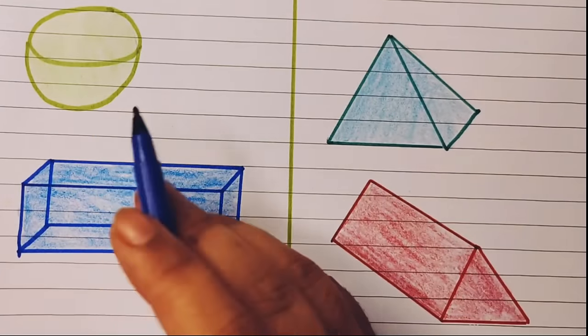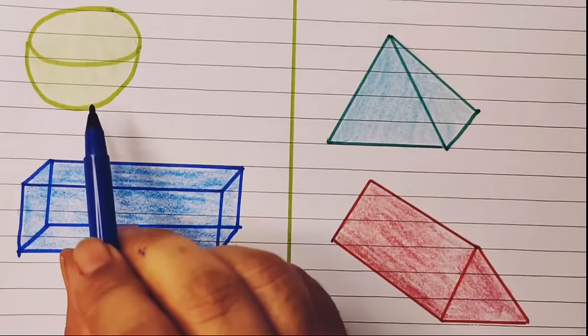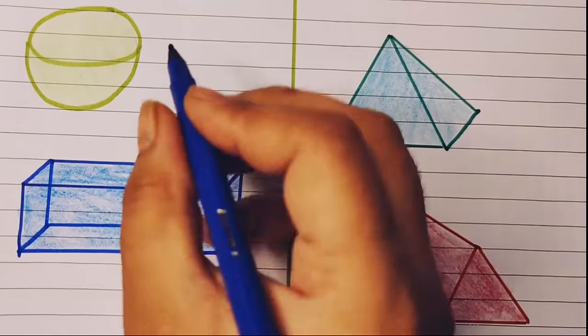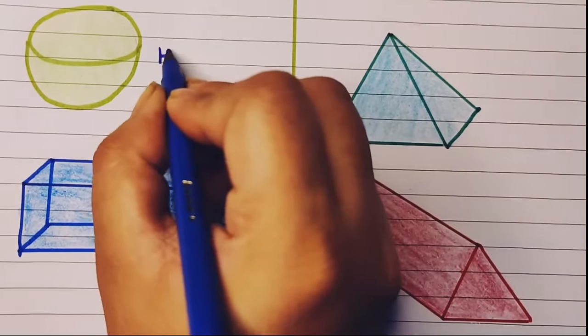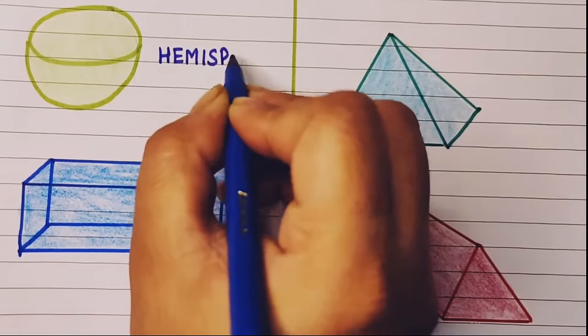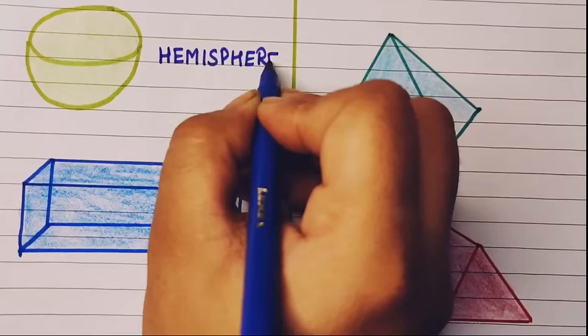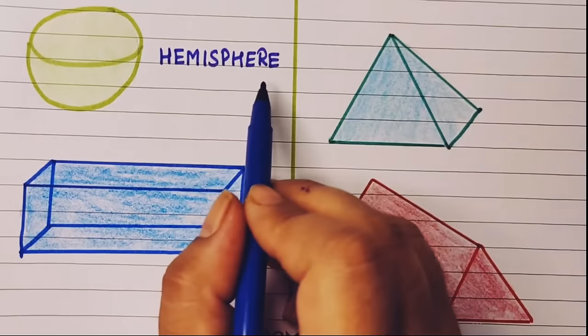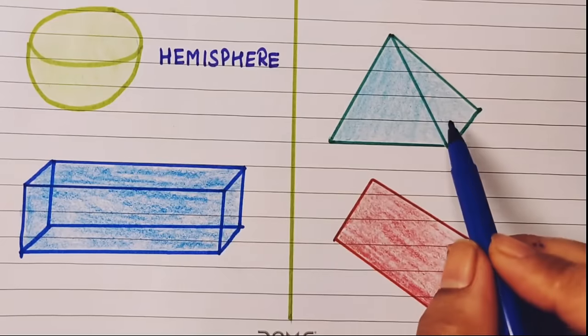The next shape is hemisphere. That is when we cut out a sphere, it gives the hemisphere. Spelling is H-E-M-I-S-P-H-E-R-E, hemisphere.